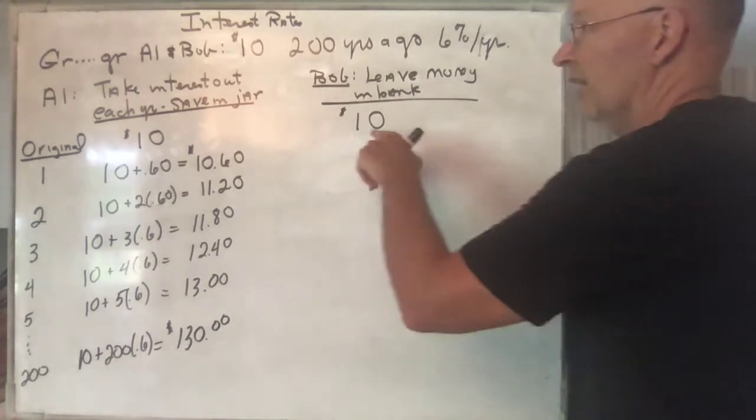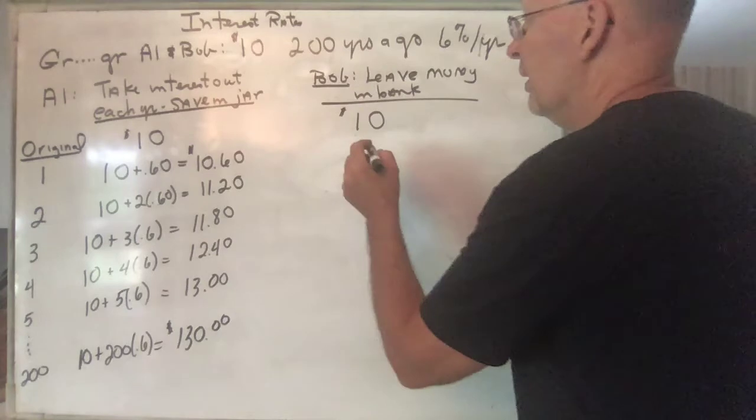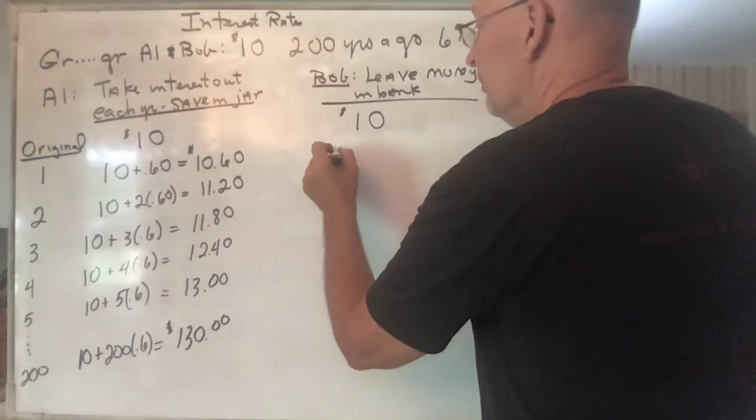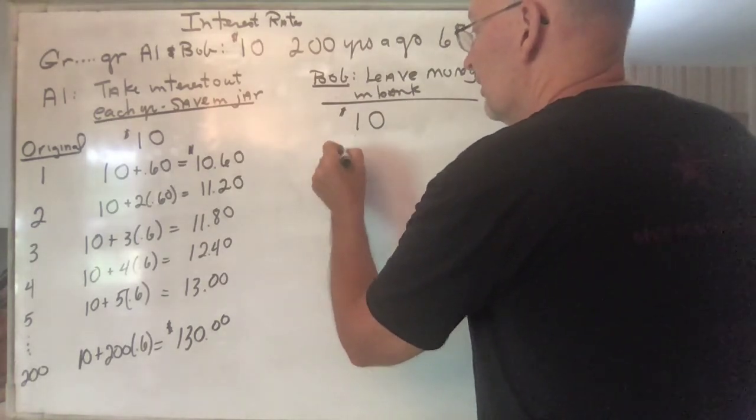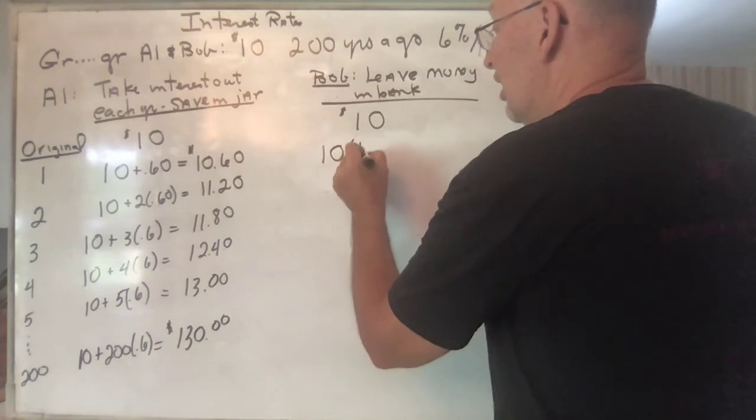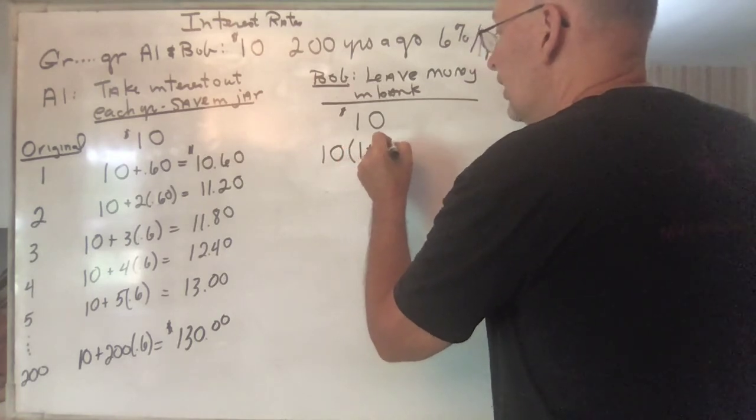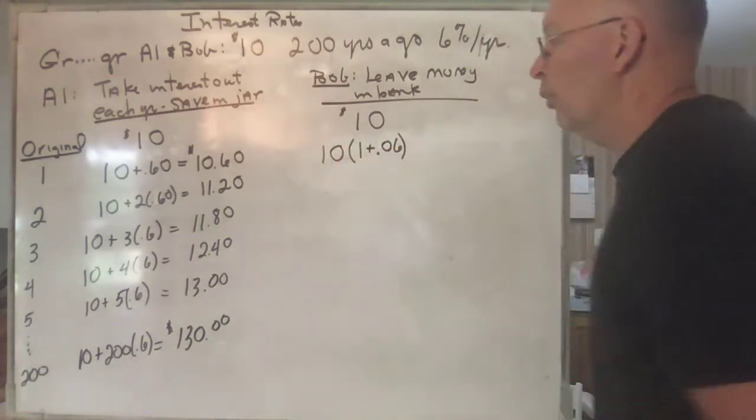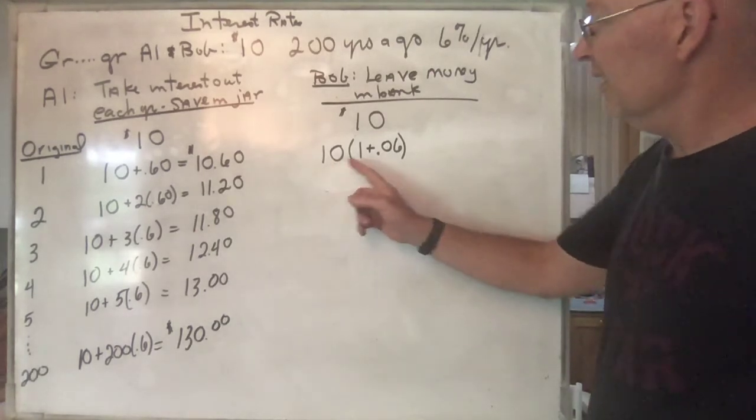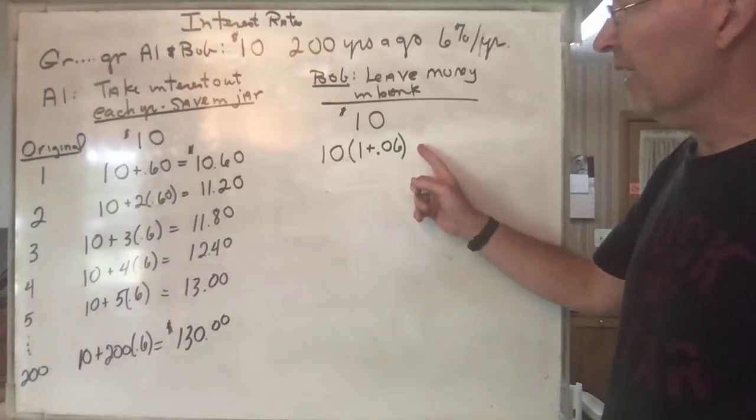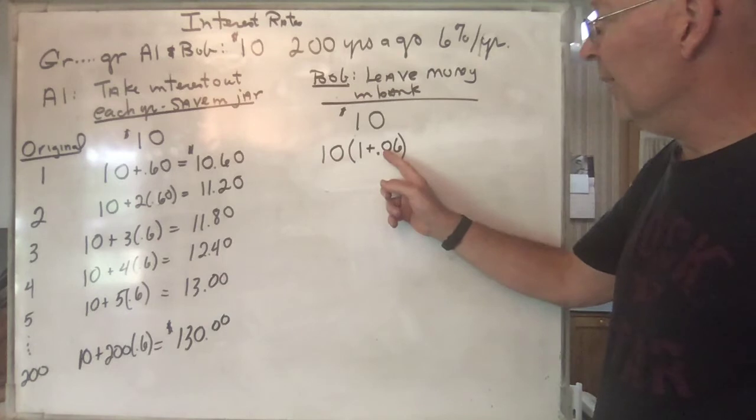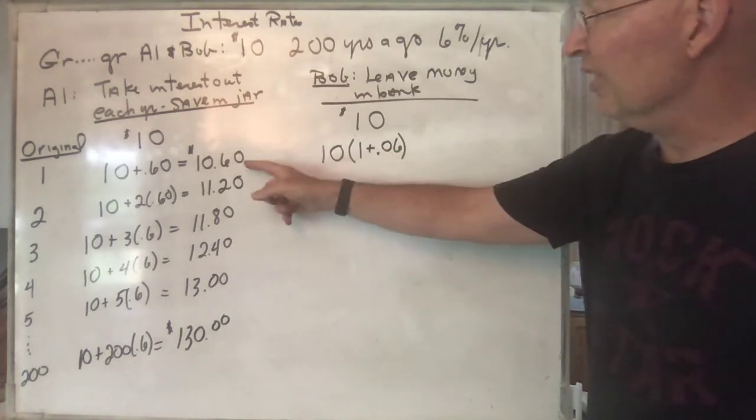So Bob leaves the money in the bank. So at the end, he starts off with $10. At the end of the first year, the easiest way to think about it is there's your $10, you multiply that by 1.0 plus $0.06.